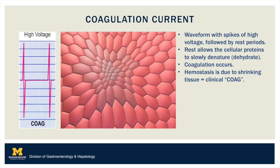A coagulation current is pulsed high voltage, often higher than the voltage of the cutting current but with intervening rest periods. This latency between pulsed episodes allows for dehydration of cellular proteins resulting in shrinking of tissue. This shrinking of tissue results in hemostasis via desiccation.